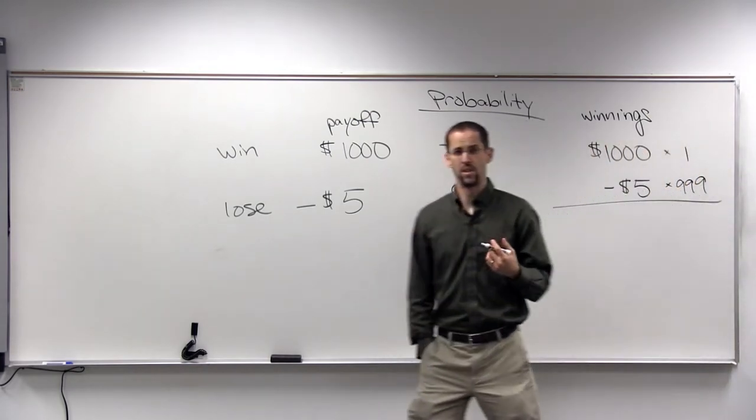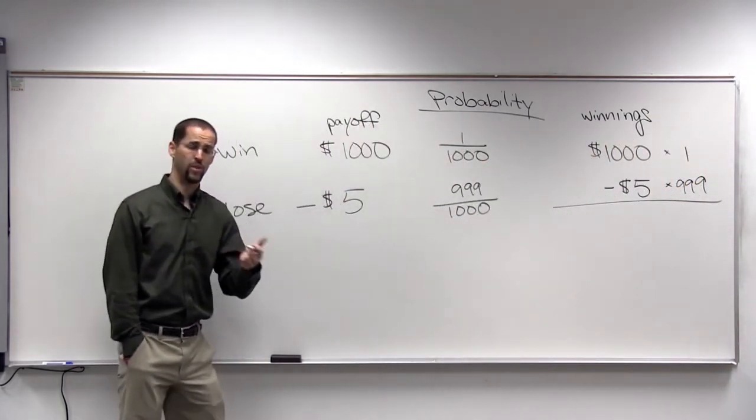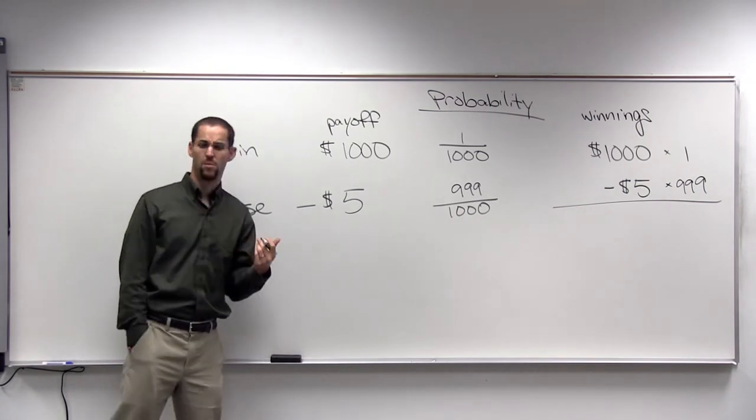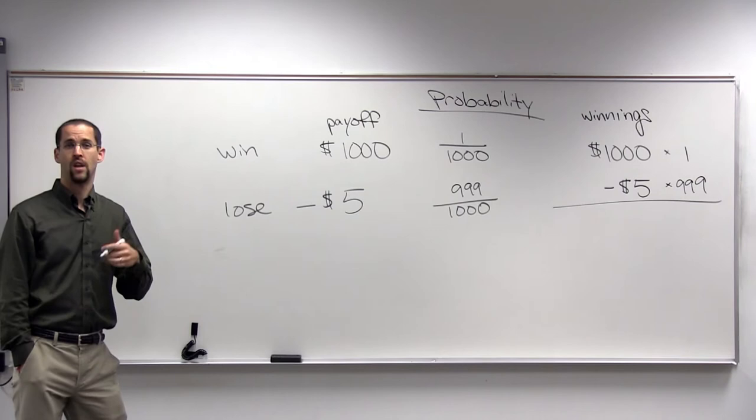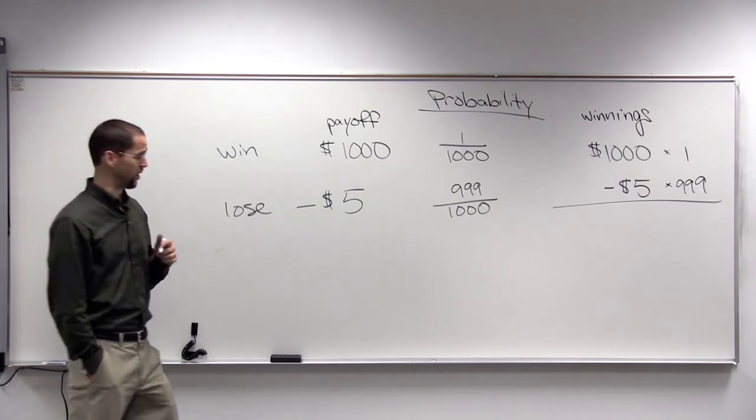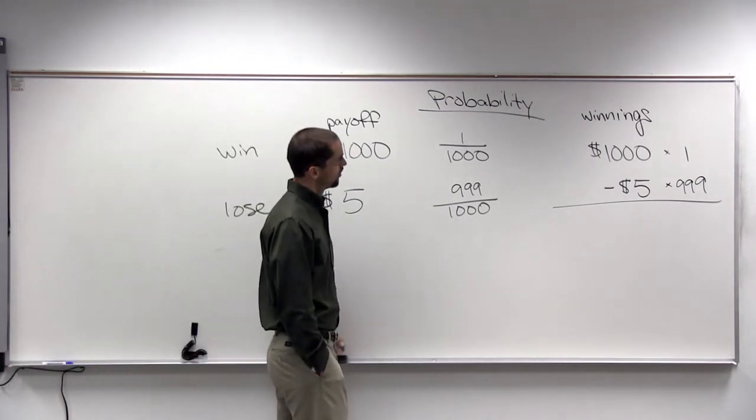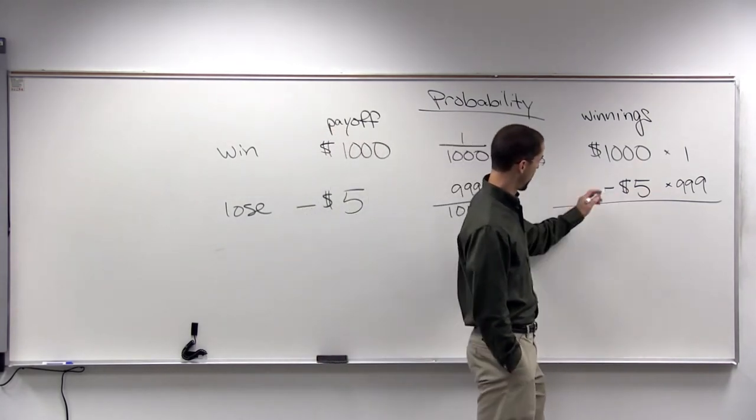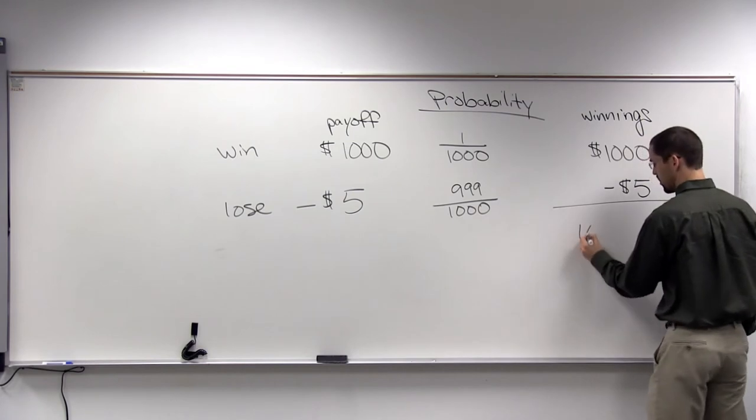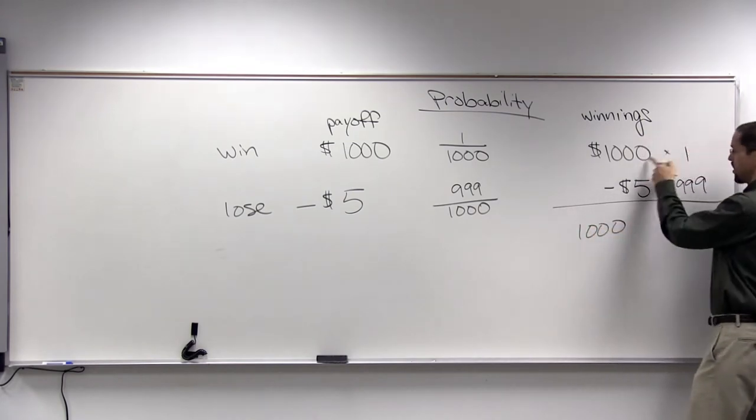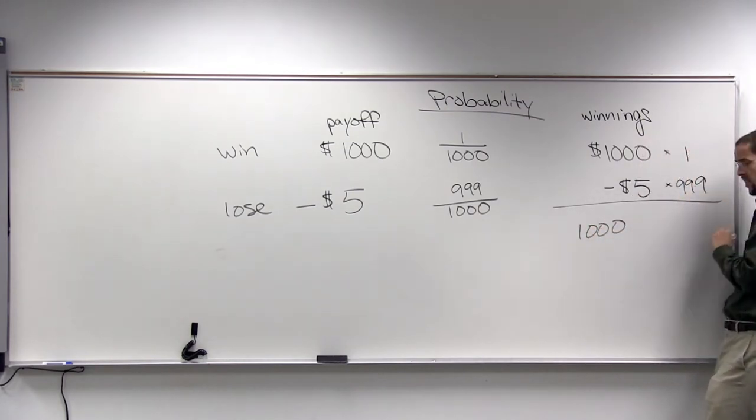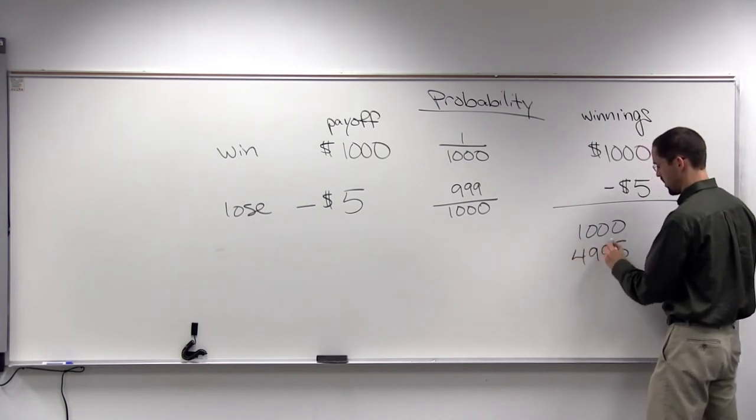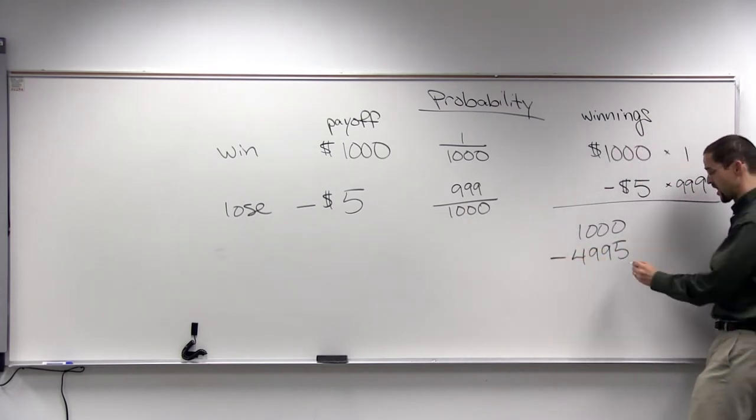And you lost $5, 999 times. We want to figure out what your total winnings or your total losings, in this case, turn out to be. And then we'll talk about your average winnings or average losings. We do this subtraction and multiply that out and we get 1,000 times one. Five times 999 is 4,995. But I've lost that.